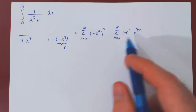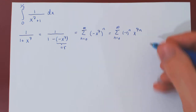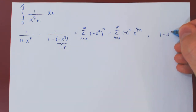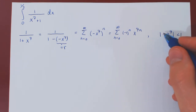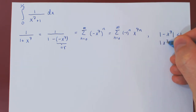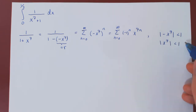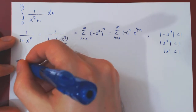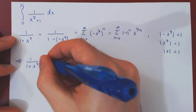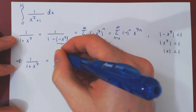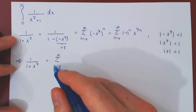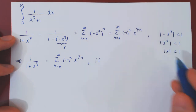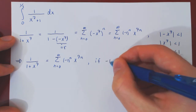This is of course only valid if the absolute value of r is strictly less than 1. Since r is −x⁷, the absolute value reduces to |x|^(7n) < 1. Taking the 7th root on both sides, we get |x| < 1. So the rational function 1/(1 + x⁷) is expressible as the power series — the sum from n = 0 to infinity of (−1)ⁿ x^(7n) — and this is valid for |x| < 1, that is, x between −1 and 1.